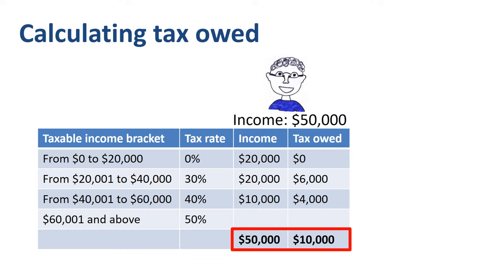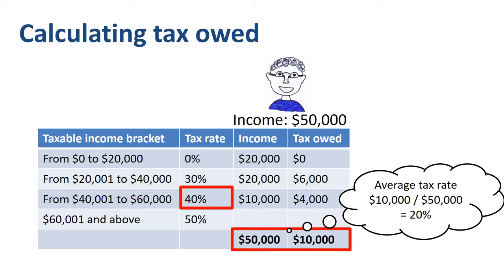We could say that John makes $50,000 gross and $40,000 net. His marginal tax rate is 40%. The marginal tax rate is the tax rate an individual would pay on one additional dollar of income. John's average tax rate is the $10,000 tax owed divided by his gross income of $50,000, which is 20%.